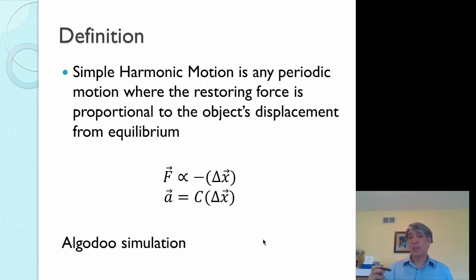First off, simple harmonic motion is any periodic motion where the restoring force is proportional to the object's displacement from equilibrium. Periodic motion means it repeats itself over and over at a constant time interval. So the second hand moves one every second. That's an example of periodic motion or the minute hand. The second hand makes a full circle every minute. A person bouncing a ball where it's a constant time between each bounce, that's another example of periodic motion.